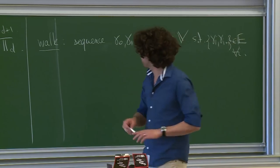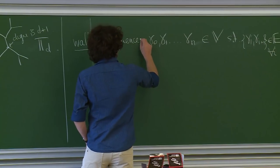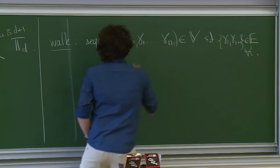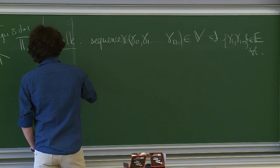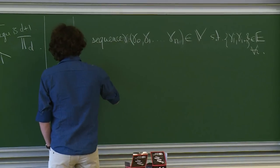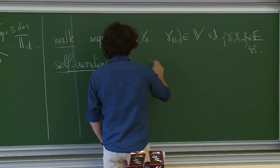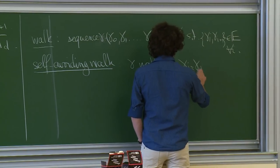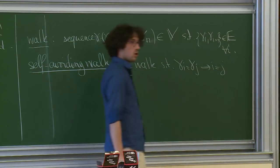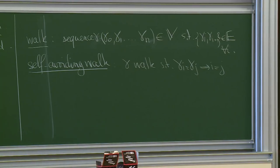We say it's a self-avoiding walk — a walk such that γ_i = γ_j implies i = j. It's a one-to-one walk: you are allowed to visit every vertex of your lattice only once.